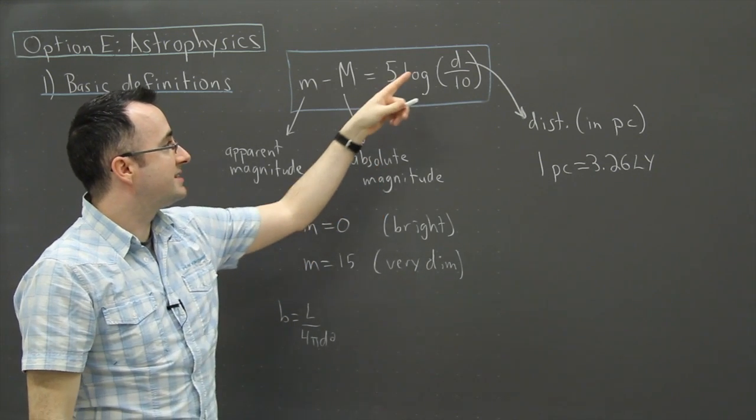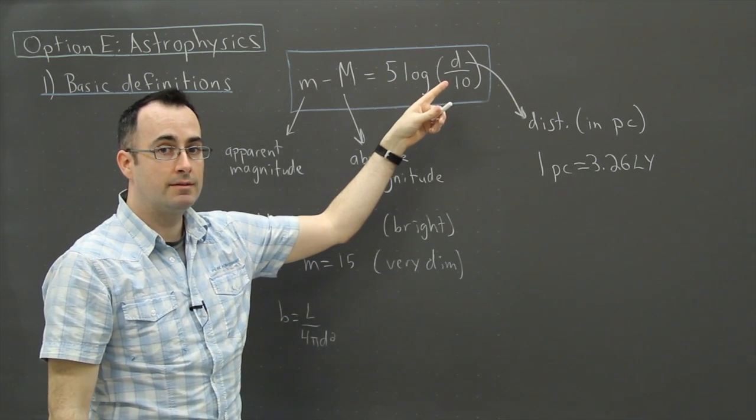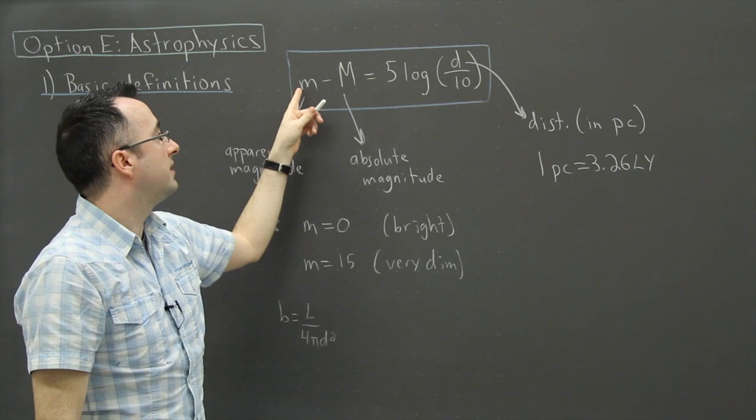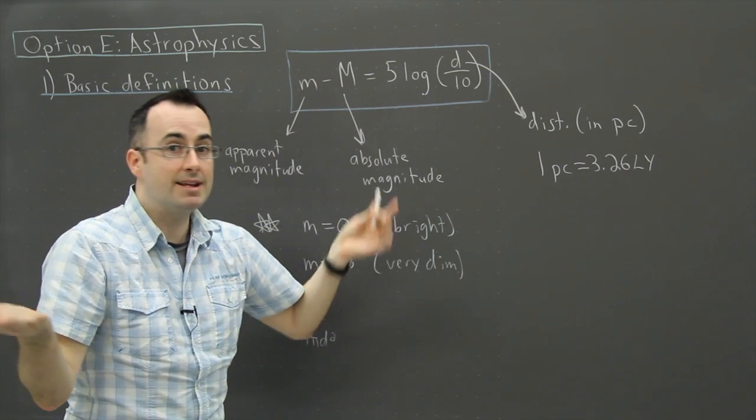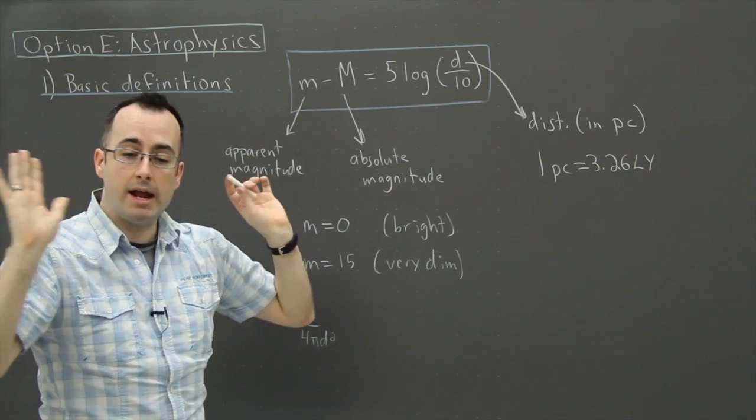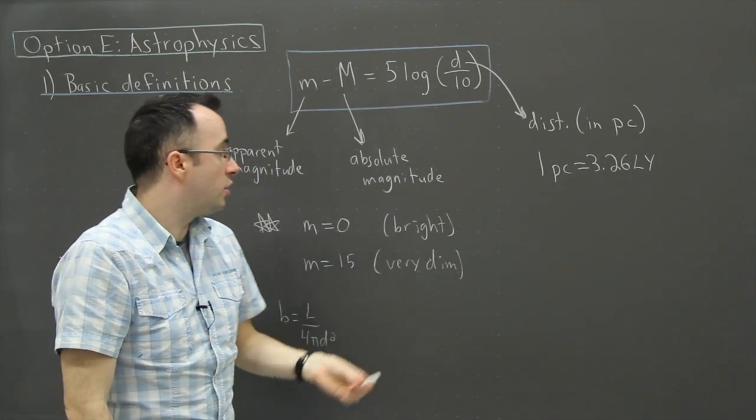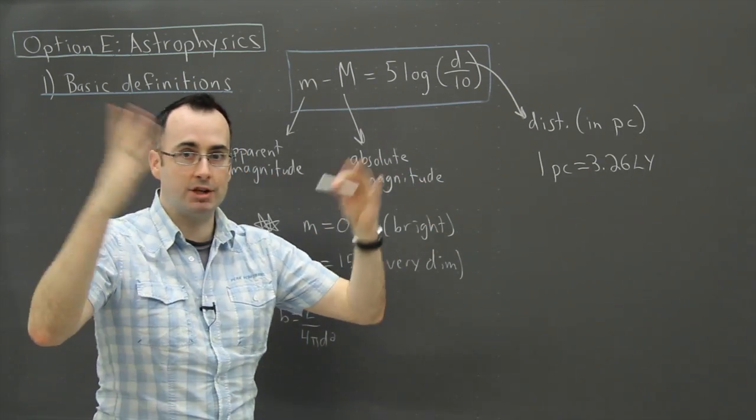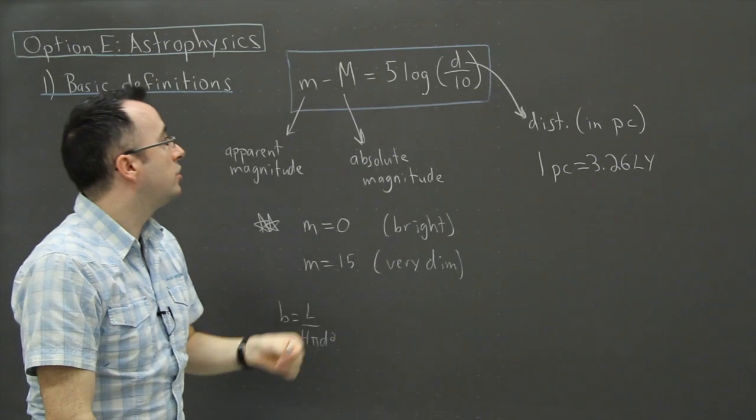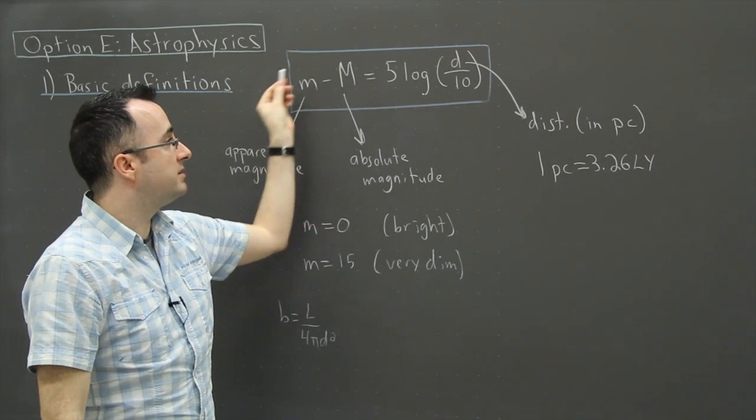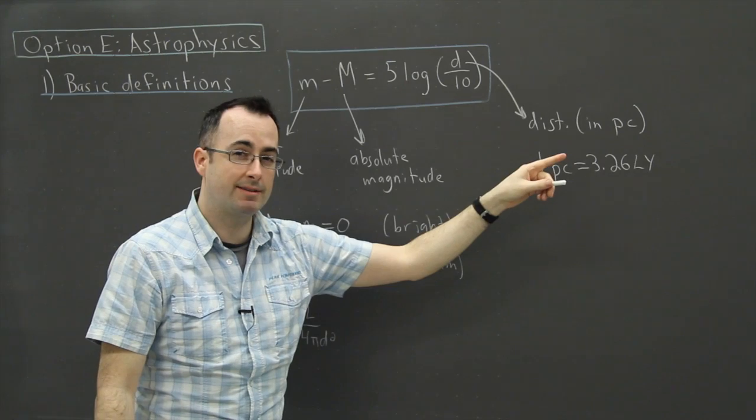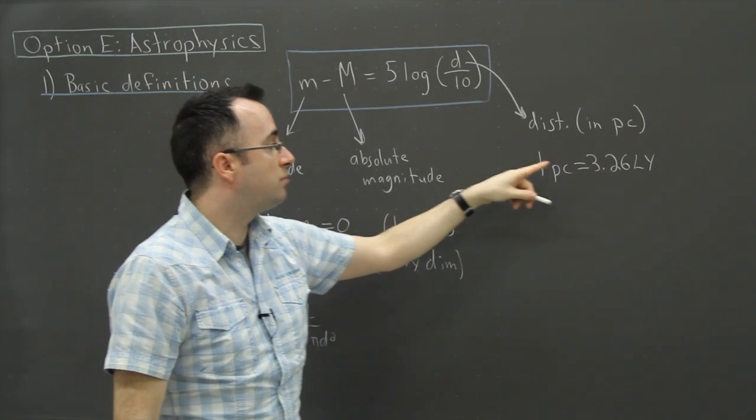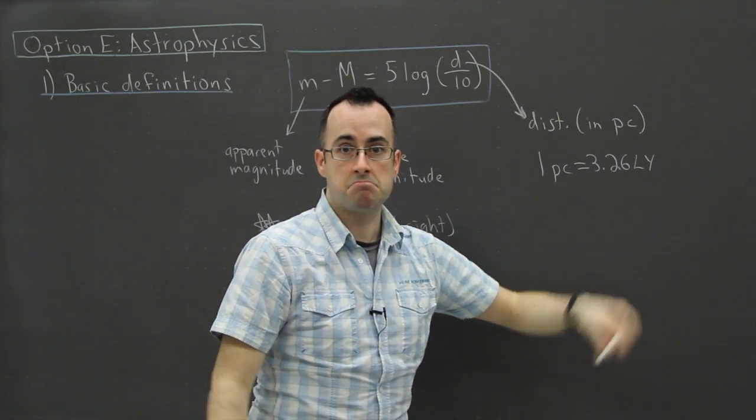So again, as long as you make the distance equal to 10 parsecs, you'll see that your apparent magnitude equals your absolute magnitude. That's how it's been defined. It's arbitrary. They could have chosen any other distance as well, but they just chose 10 parsecs as the magic distance. So as long as you use this equation here with magnitudes, then you get distance. But keep in mind, it's measured in parsecs. And 1 parsec is 3.26 light years. There you go.